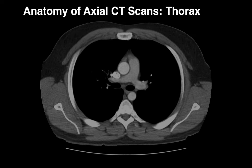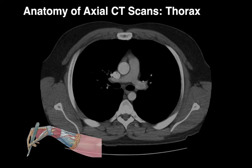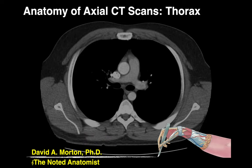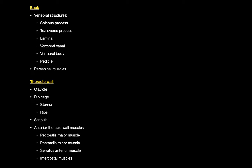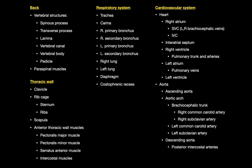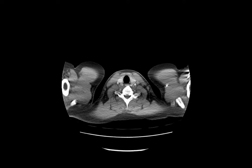We're going to talk about anatomy of axial CT scans and focus on the thoracic cavity. My name is Dr. Morton, I'm an anatomist and we're going to approach this by talking about the anatomy of the axial sections in the thoracic region, covering structures of the back, thoracic wall, respiratory system, and cardiovascular system. This is not meant to be a comprehensive radiological view — the context is I'm an anatomy professor teaching health professional students about anatomy in the context of imaging.